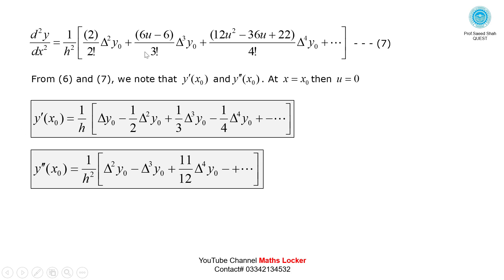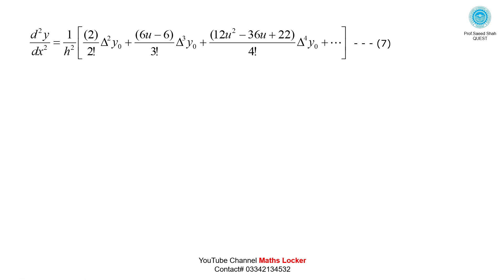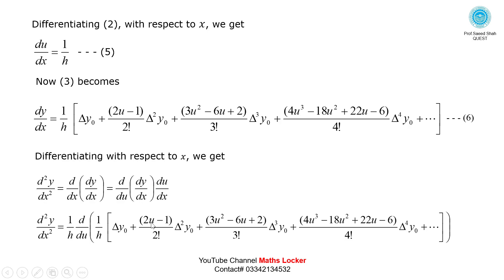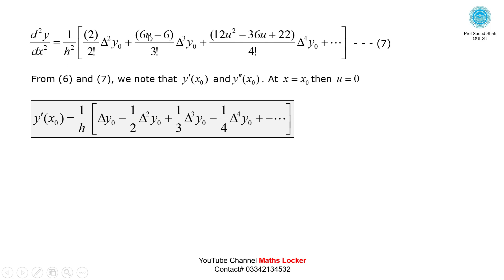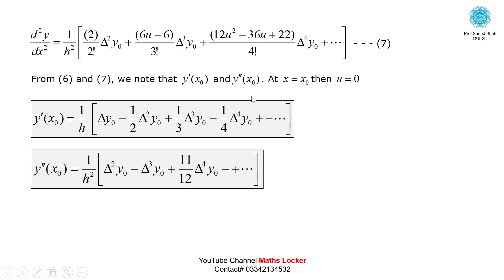Similarly, substituting u = 0 into the second derivative expression, we get the second derivative formula: y''(x₀) = (1/h²)[delta² y₀ - delta³ y₀ + (11/12)delta⁴ y₀ + ...]. These are the two key formulas — first derivative and second derivative at x = x₀.